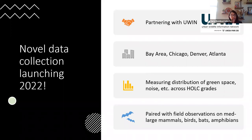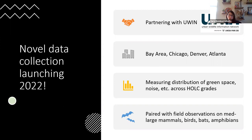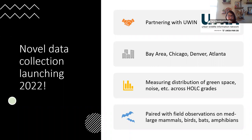My team is now partnering with collaborators in the Urban Wildlife Information Network, specifically in the Bay Area, Chicago, Denver, and Atlanta. We're going to measure the distribution of green space, noise, and many other environmental factors across different HOLC grades, and pair that with field observations of medium-to-large mammals, birds, bats, amphibians, and other species. This work launched in 2022.